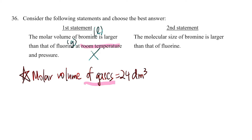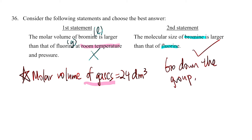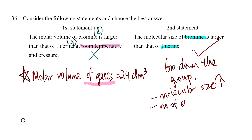The second statement says the molecular size of bromine is larger than that of fluorine. This is definitely true. As you go down Group 7, the atomic and molecular size increases because the number of electrons increases as you go down the group. That's why this statement is true.